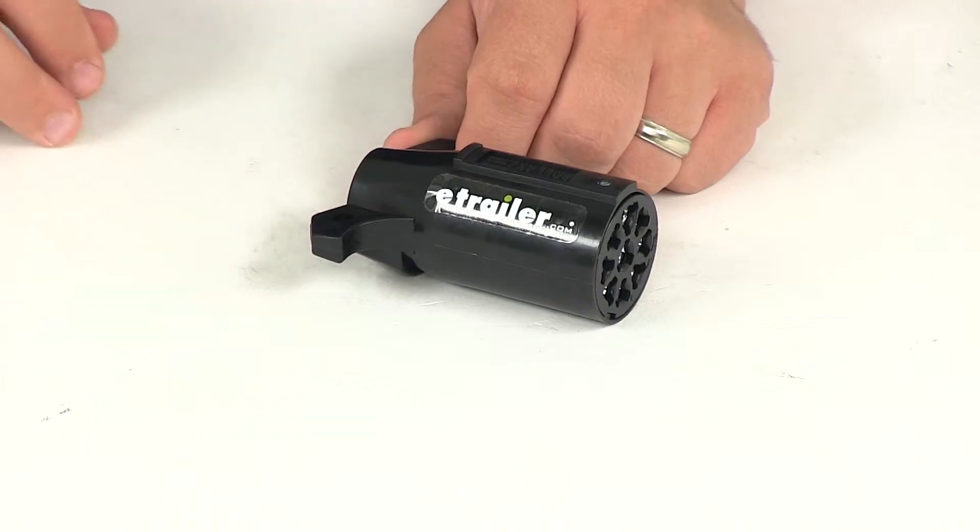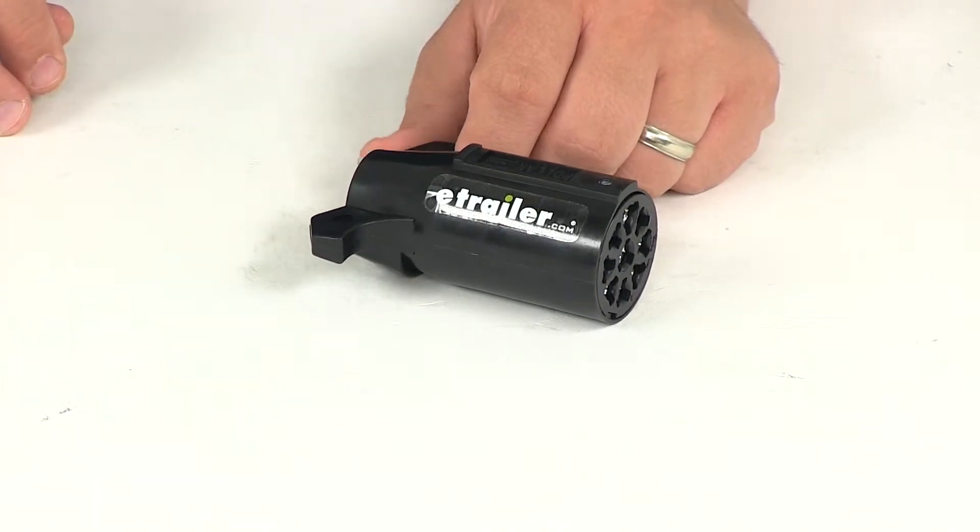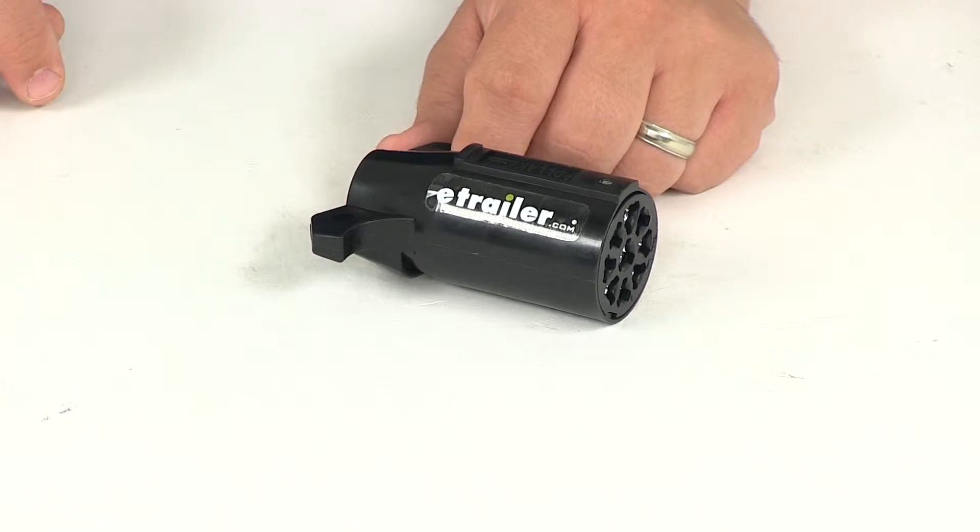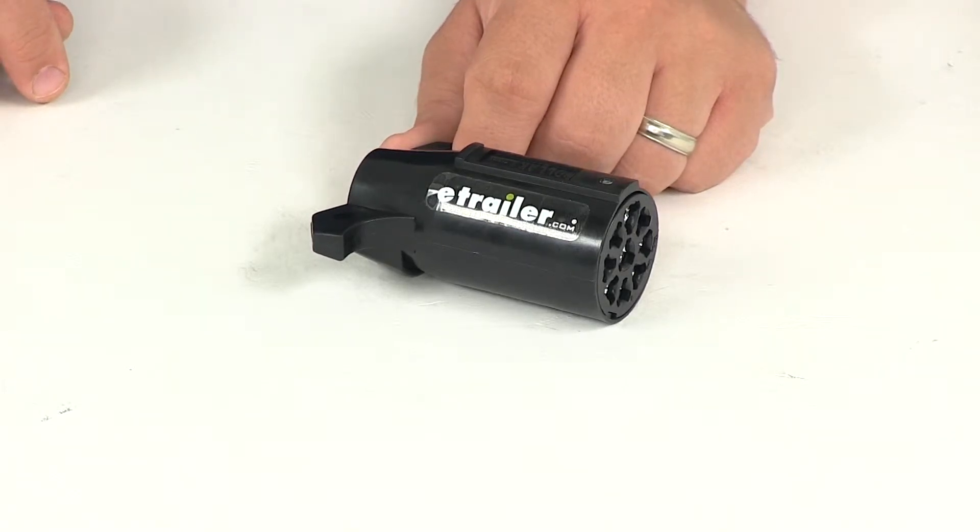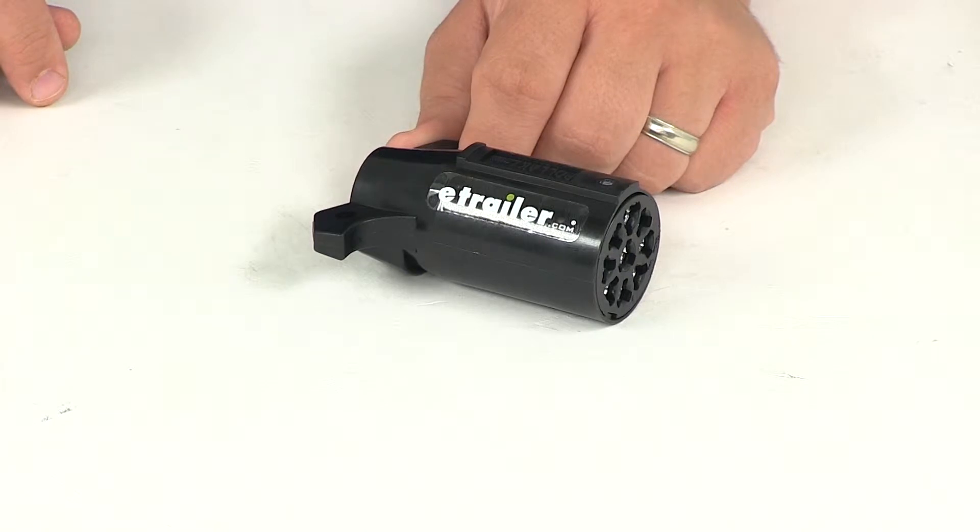When it comes to the wiring configuration, we'll give you the color, the circuit, and the recommended wire gauge. White is ground, 8-gauge. Blue is electric brakes, 12-gauge. Green is tail, license, and running lights, 14-gauge.